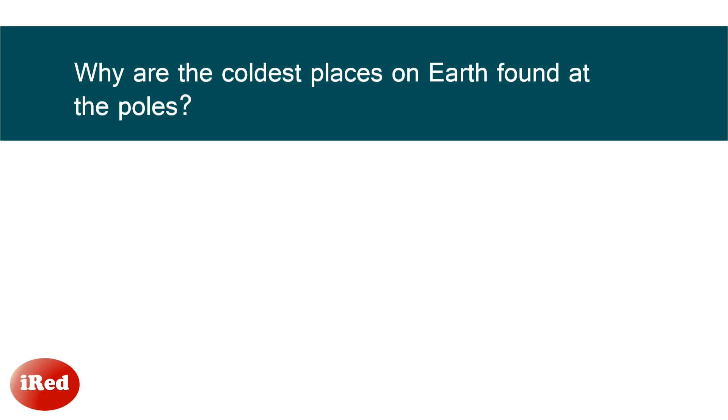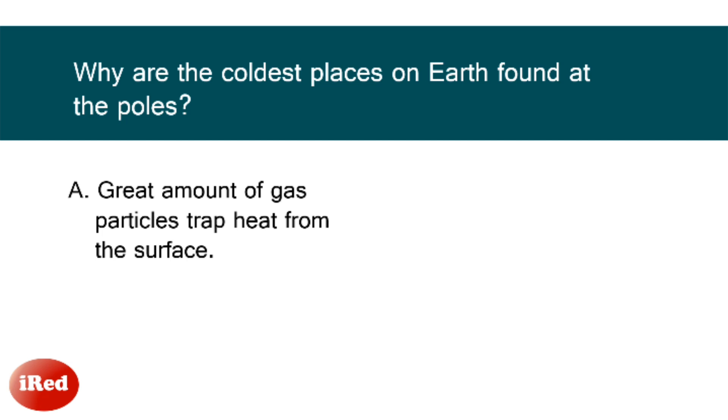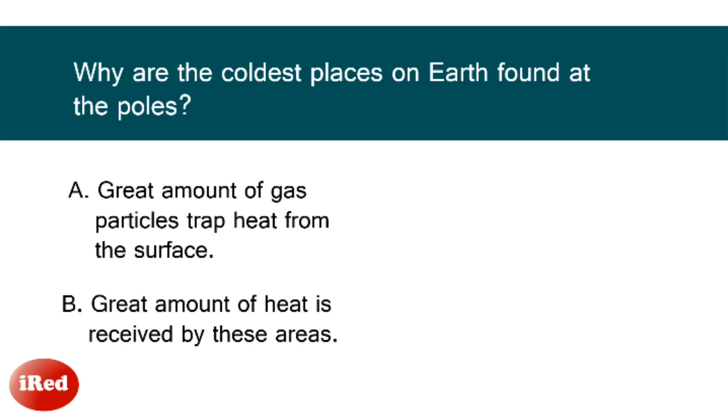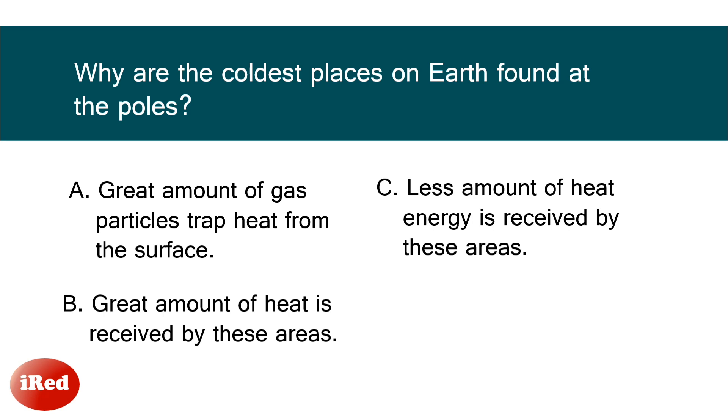Why are the coldest places on Earth found at the poles? Letter A, great amount of gas particles trap heat from the surface. Letter B, great amount of heat is received by these areas. Letter C, less amount of heat energy is received by these areas.